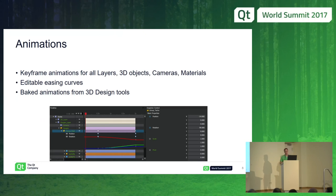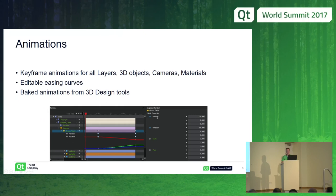Animations can be created in the design tool and baked into the export, but then you lose the freedom to modify them inside Qt 3D Studio. So you have to decide where you're doing the animation — in the design tool or in Qt 3D Studio — and the recommendation is to do them in Qt 3D Studio. Animations are basic keyframe animations, so you can animate the position and rotation of an object, defining start and end times and easing curves.